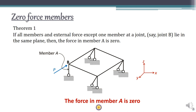Consider joint P with a force P acting on it. There are two horizontal members and a vertical member called A. The force at joint P and the forces in both horizontal members all act in the XY plane. However, member A is perpendicular to the XY plane, which means the force in member A is going to be zero.